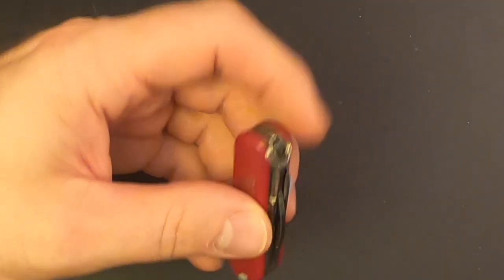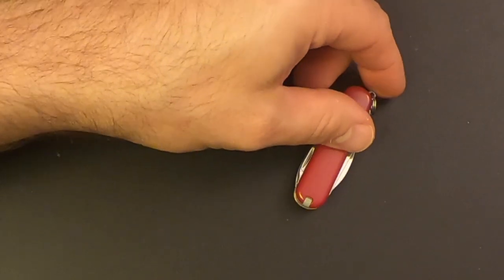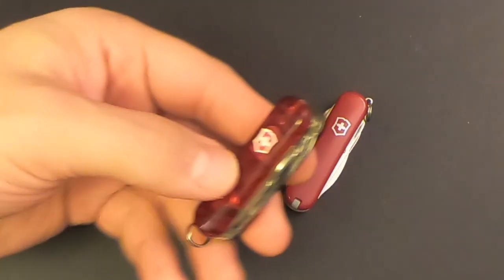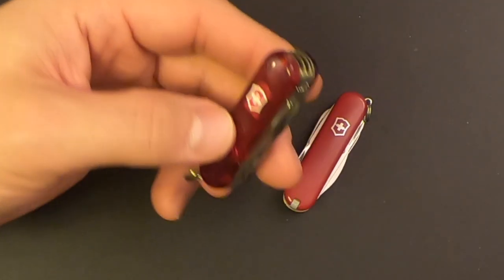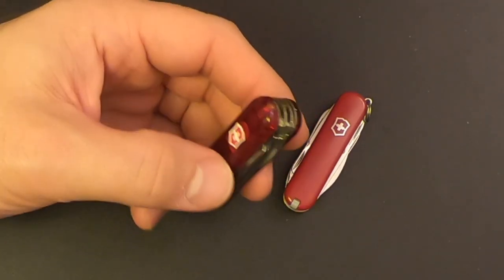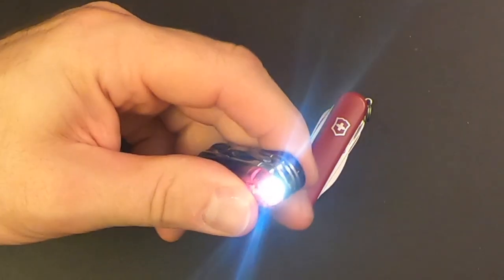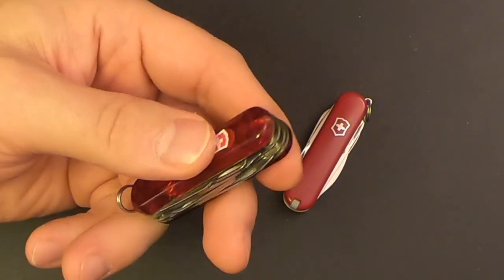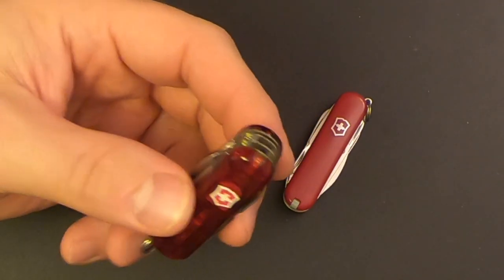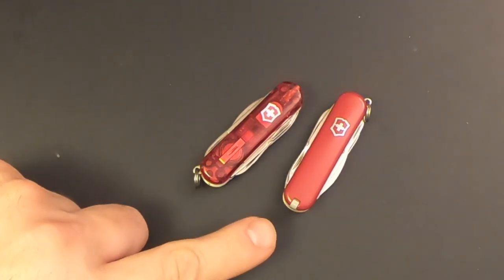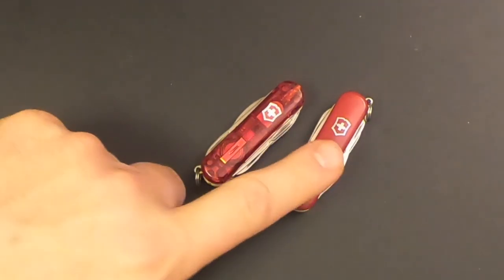Now, Victorinox does have a similar knife to the Minichamp that you might want to consider. And that is this one. This is the Midnight Minichamp. They're exactly the same, except that the Midnight Minichamp trades the tweezers for a flashlight. So if that's important to you, well, you may want to get the Midnight Minichamp. As for me, I prefer to have the tweezers because my cell phone has a flashlight. So I stuck with the Minichamp.